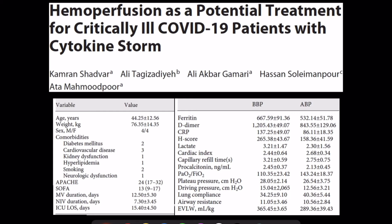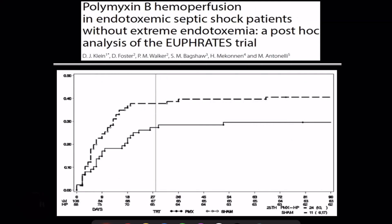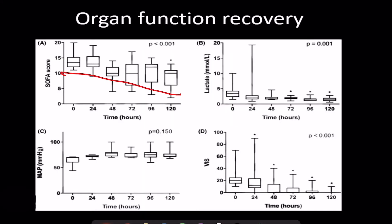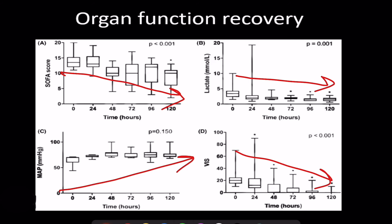A case series on hemoperfusion in COVID-19 pneumonia with cytokine storm found reduction in clinical and lab outcome parameters after treatment. A post-hoc analysis showed benefit of polymyxin B hemoperfusion therapy in the specific subgroup of endotoxemic septic shock, though the overall study was negative. A registry study of 12 patients with a mean age of 59 showed reduction in SOFA scores, improvement in MAP, decrease in lactate, and decrease in lung injury scores.